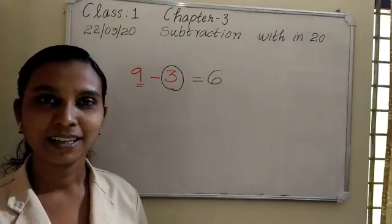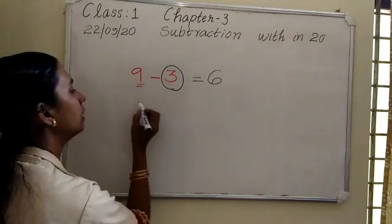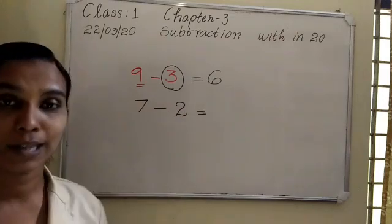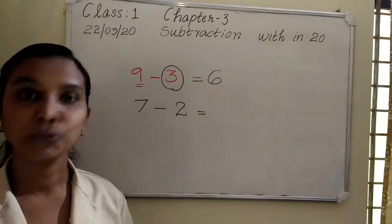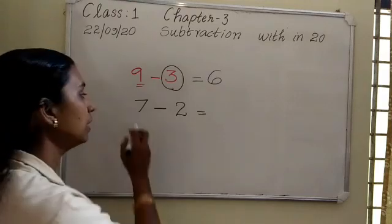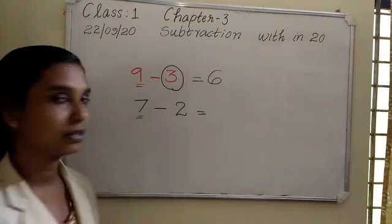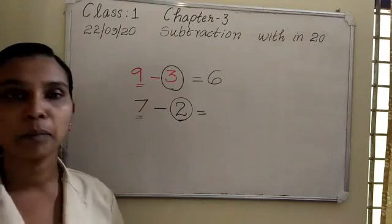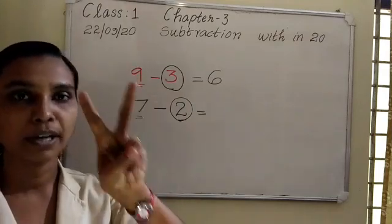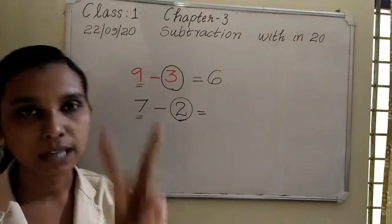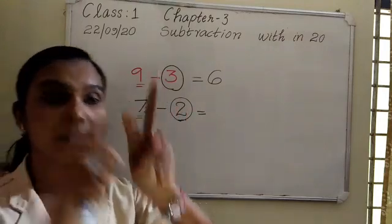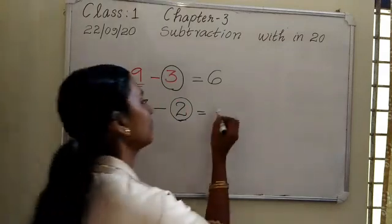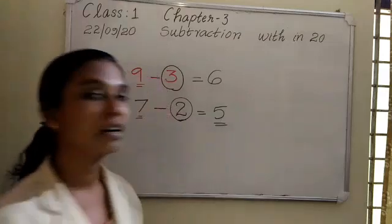Easy? One more question: 7 minus 2. Which is the bigger number? It is 7. Keep 7 in your mind and take the smaller number 2 on your fingers. Then count backward from 7: the number before 7 is 6, then 5. So the difference is 5.